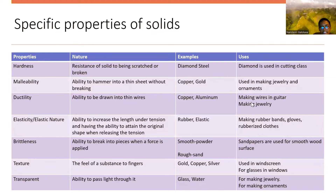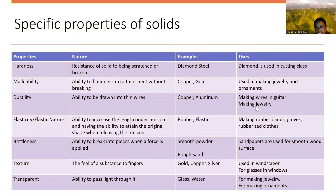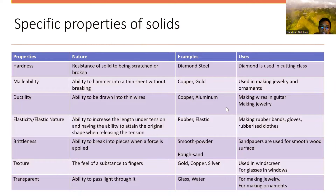Examples of elasticity are rubber and elastic. Uses include making rubber bands, rubber gloves, and rubberized clothes. The next property is brittleness. The nature of brittleness is the ability to break into pieces when a force is applied.